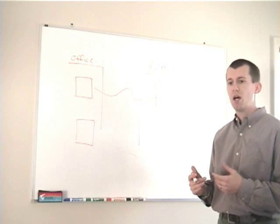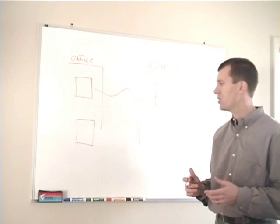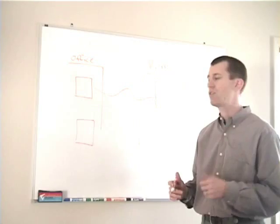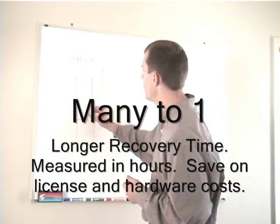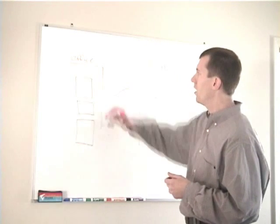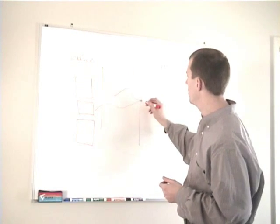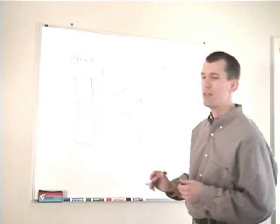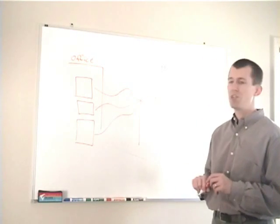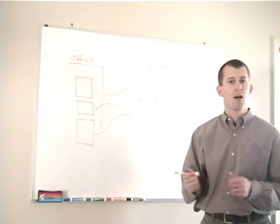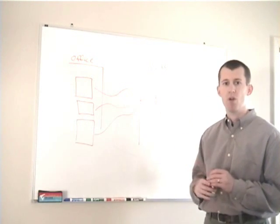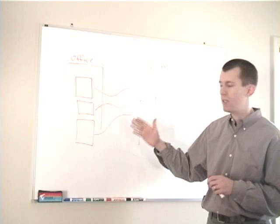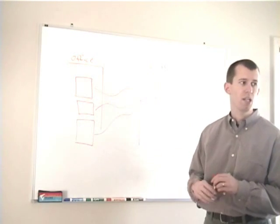What some people do to save money for disaster recovery is they do what's called a many-to-one. So, in that scenario, let's say we've got three production servers in our main office here. What we do is we send data to three servers here in our remote site. Oftentimes, that can be due to save money. It may make your recovery time longer, but your recovery point is still good because you're continuously sending data across.